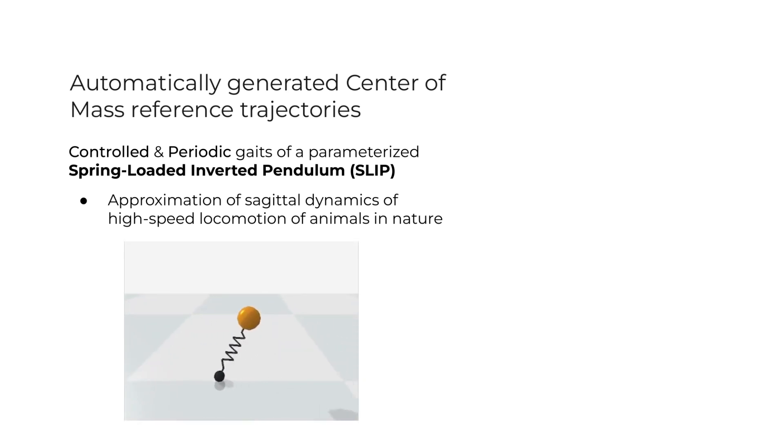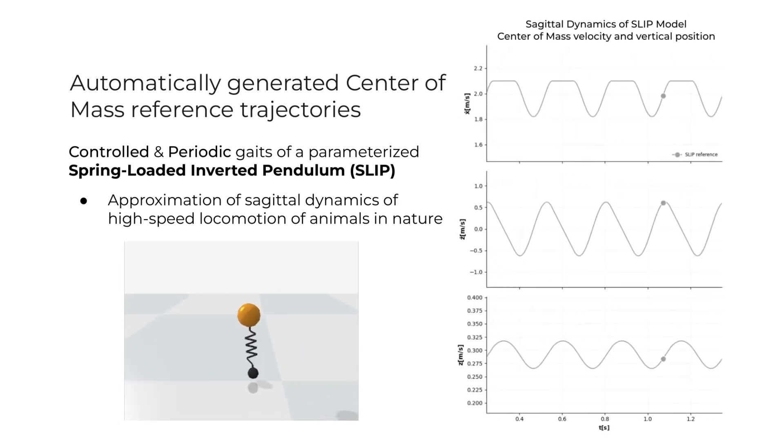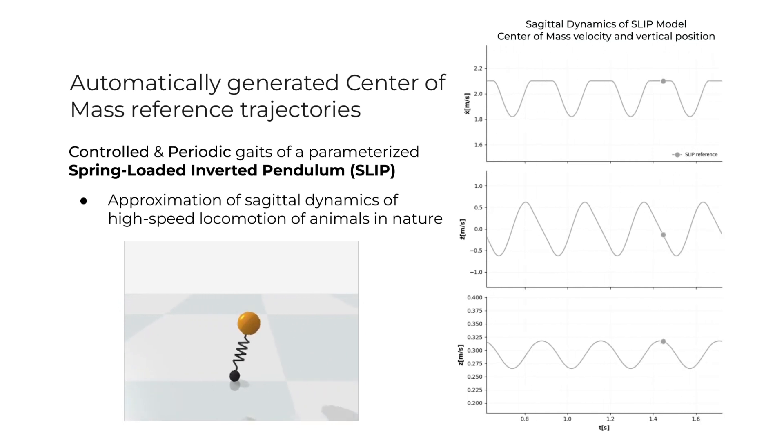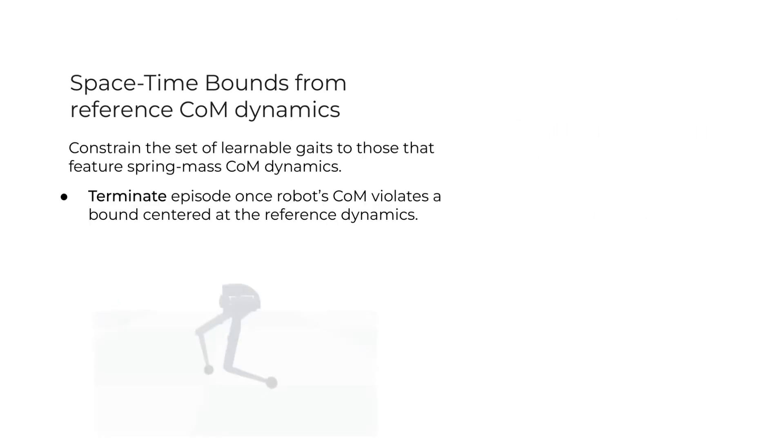To automatically obtain reference motions, we generate controlled and periodic gait trajectories of the spring-loaded inverted pendulum model. This provides the reference dynamics for the center of mass of our robot, showcasing the sagittal spring-mass dynamics observed in animals in nature during high-speed locomotion.